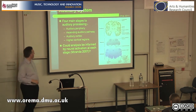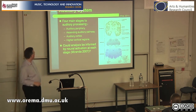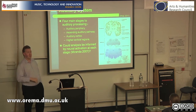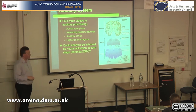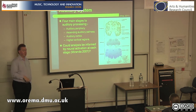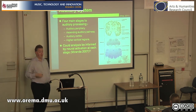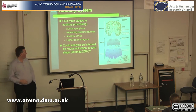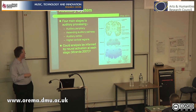A very quick run through the auditory system. There are basically four stages in auditory processing: the auditory periphery, which we define as anything up to the cochlea; the ascending auditory pathway up to the auditory cortex, which forms a third stage; and then higher cortical regions. The question I want to address is: can analysis be informed by neural activation at each stage?